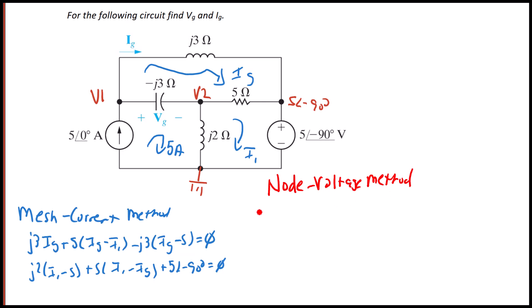If I do KCL at V2, I'm going to have V1 minus five angle negative 90 degrees over J3 plus V1 minus V2 over negative J3 and that equals five angle zero degrees in amps.